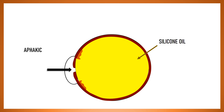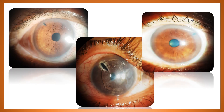So to avert this condition, we need to create a PI. Now the question arises that why specifically an inferior PI? Because most of us have seen a PI in the superior part of the iris, superotemporal or superonasal.